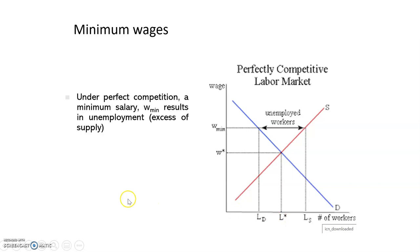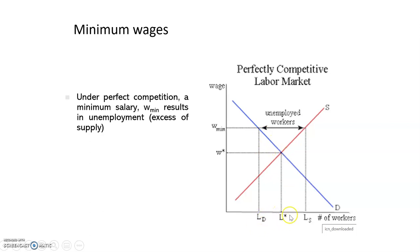So what happens if we have a minimum salary that is above the equilibrium wage? If the government at some point decides to increase the minimum wage above the market clearing wage, we can see that at this wage the demand for workers will decrease compared to this point — it will be LD instead of L star.